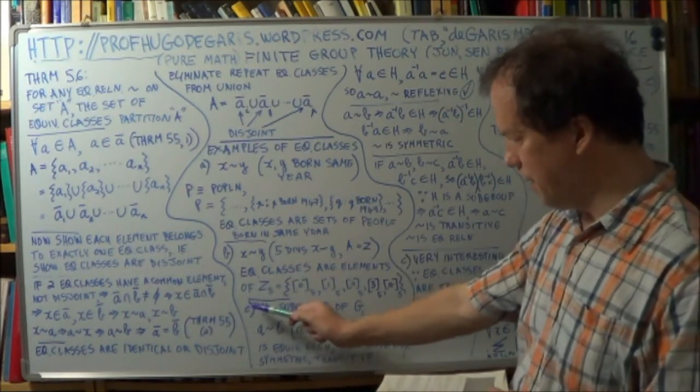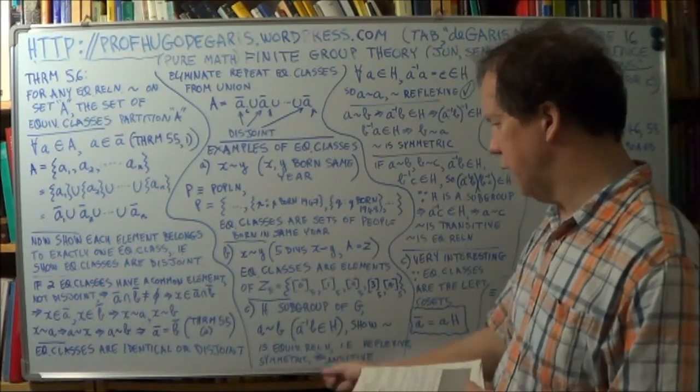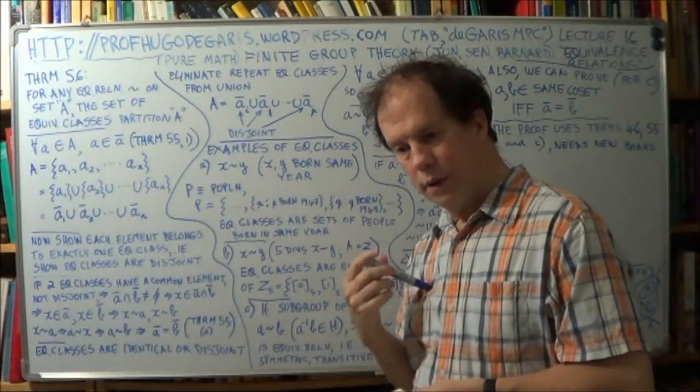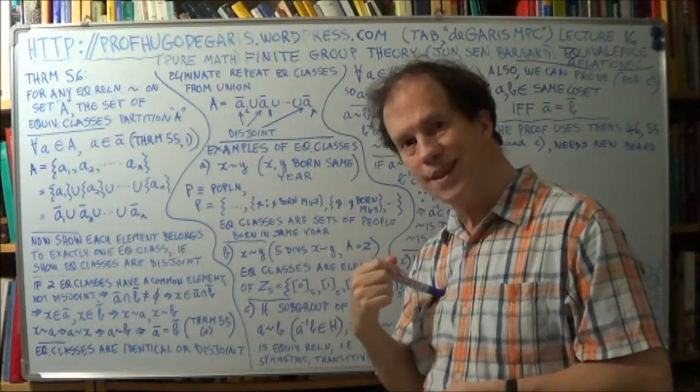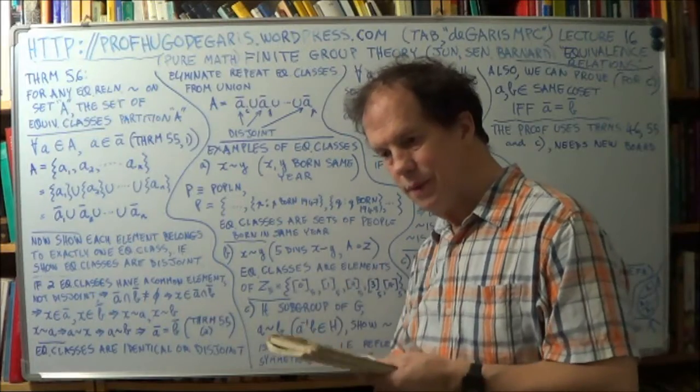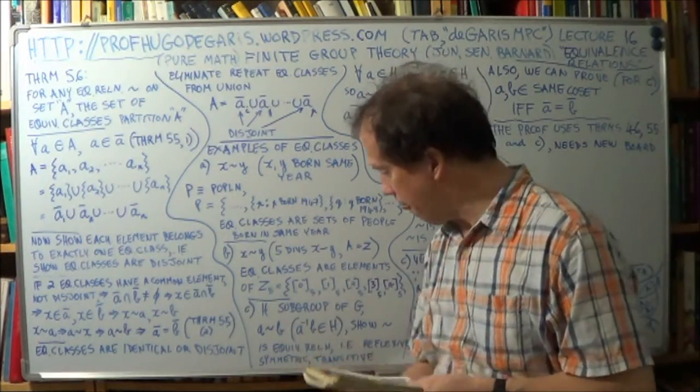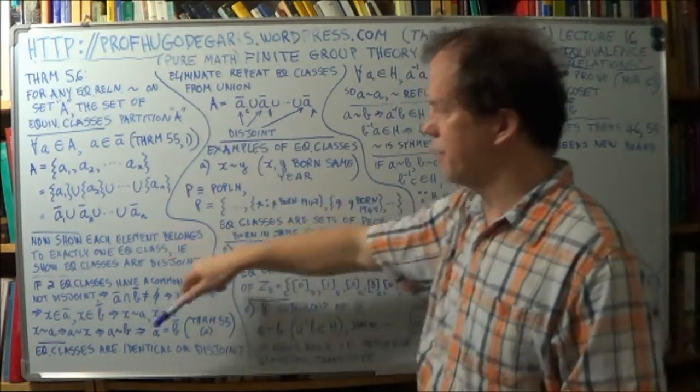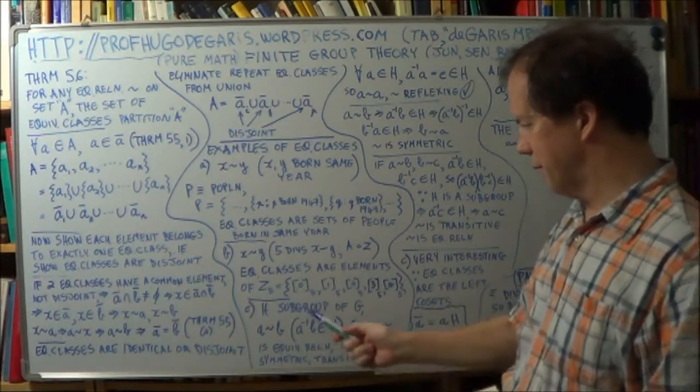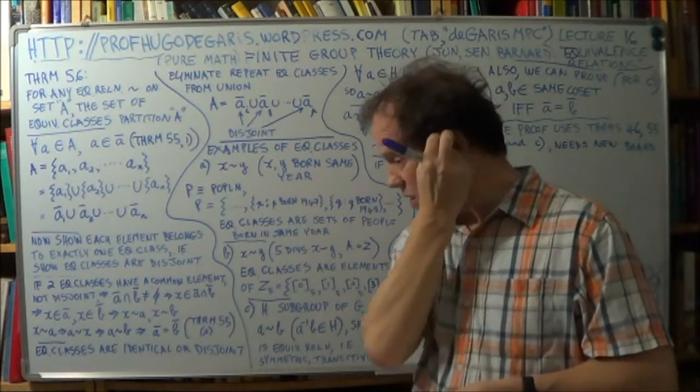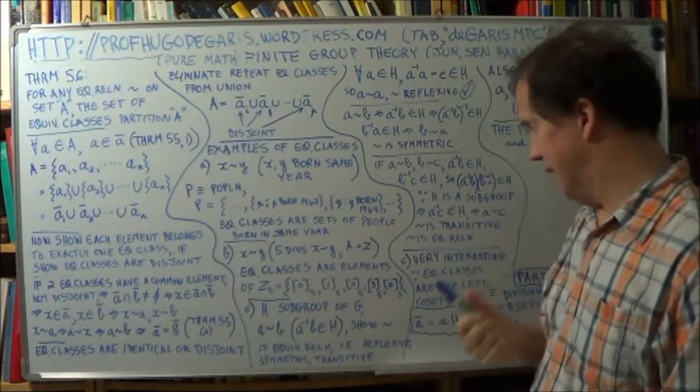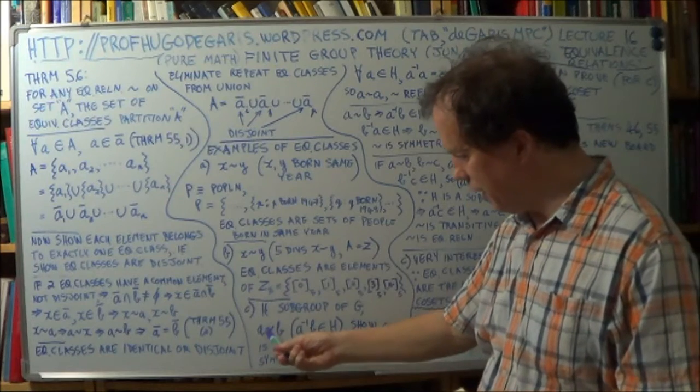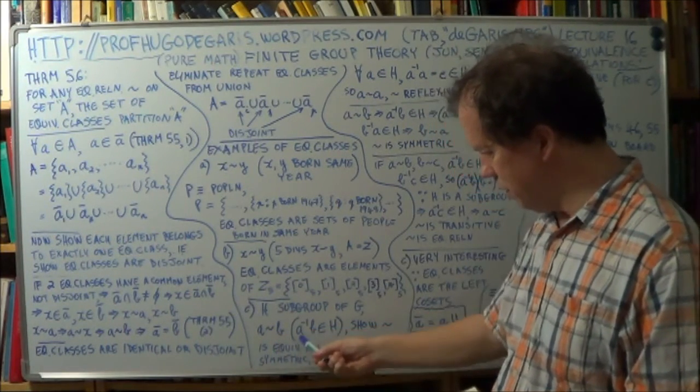All right. Now this next one, C, example C, is particularly interesting because it links equivalence classes and cosets. And I'll spend quite a bit of theory on it. In fact, probably most of the next board after this one, because there is quite a bit of theory. It gets quite dense.